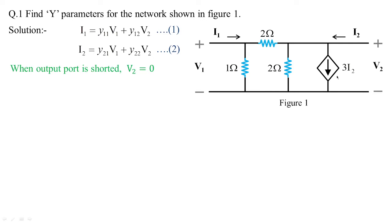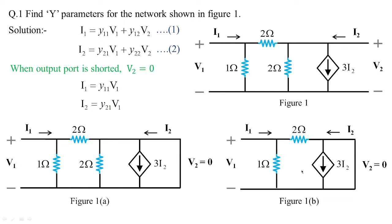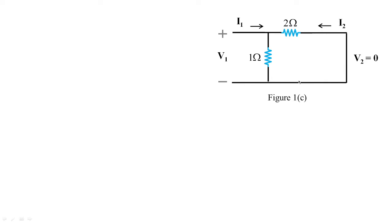When the output port is shorted — that is, output voltage equals zero — from equations 1 and 2 we get I1 = y11·V1 and I2 = y21·V1. When the network is shorted, figure 1 changes to figure 1a. The short wire will not only short the 2 ohms but also 3i2, because the same current is flowing in the output port and current will take the easiest path. Hence figure 1a changes to figure 1b, and then to figure 1c.